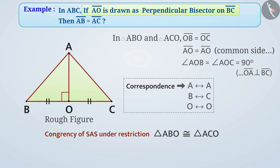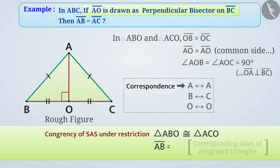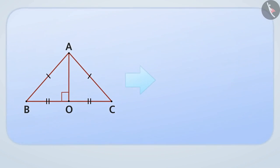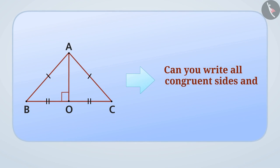Corresponding sides of congruent triangles are also congruent, so AB is equal to AC. Can you write all congruent sides and angles? Try yourself.